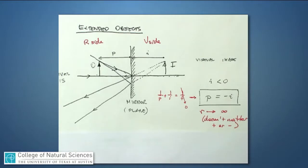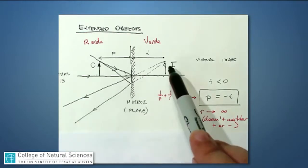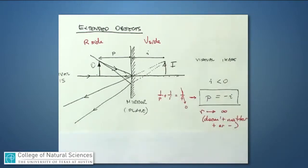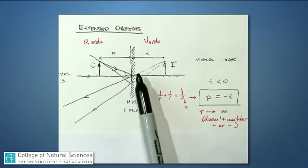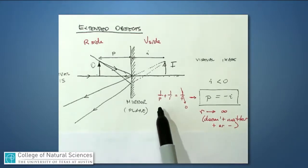Notice that the light rays never meet. If I were an observer on this side, they never meet at my eye, but they would appear to come from a common origin right there. So in fact this image is over on the V side. If I represents the distance from the mirror to the image, I can immediately anticipate that I is a negative number — but we'll see that come out in the equation.